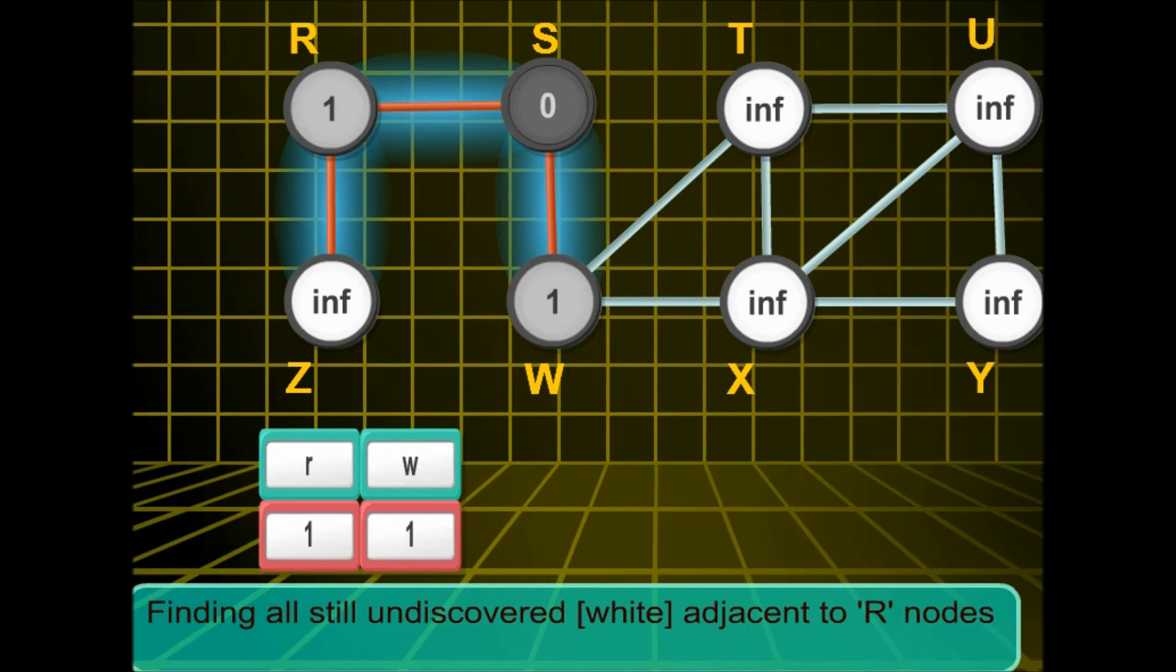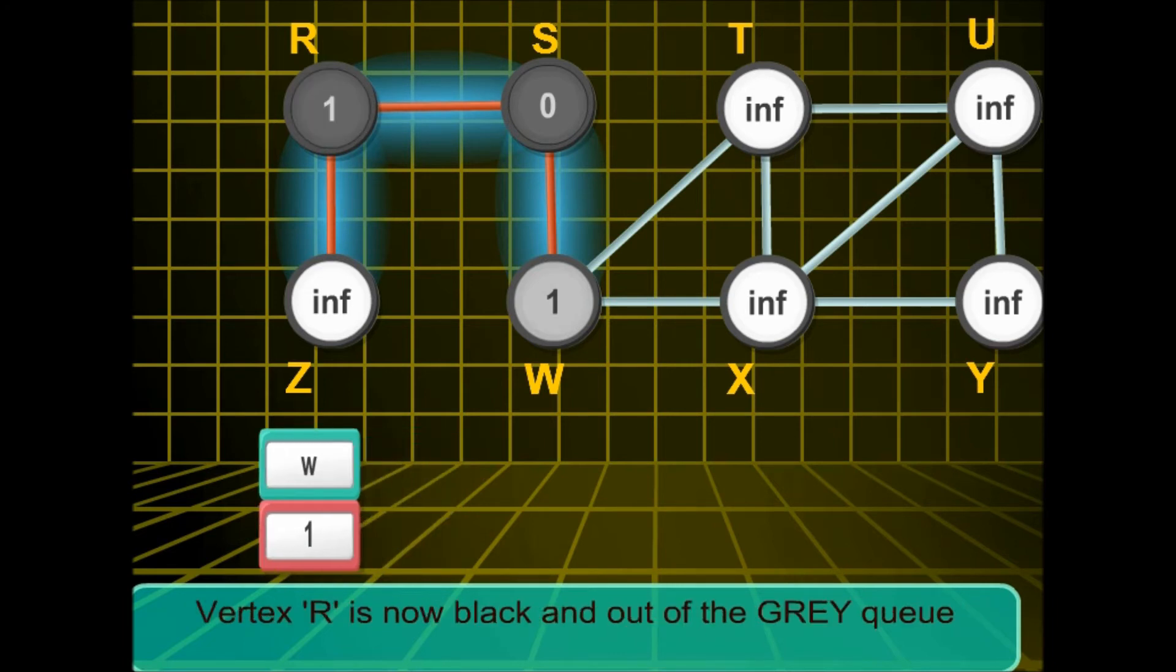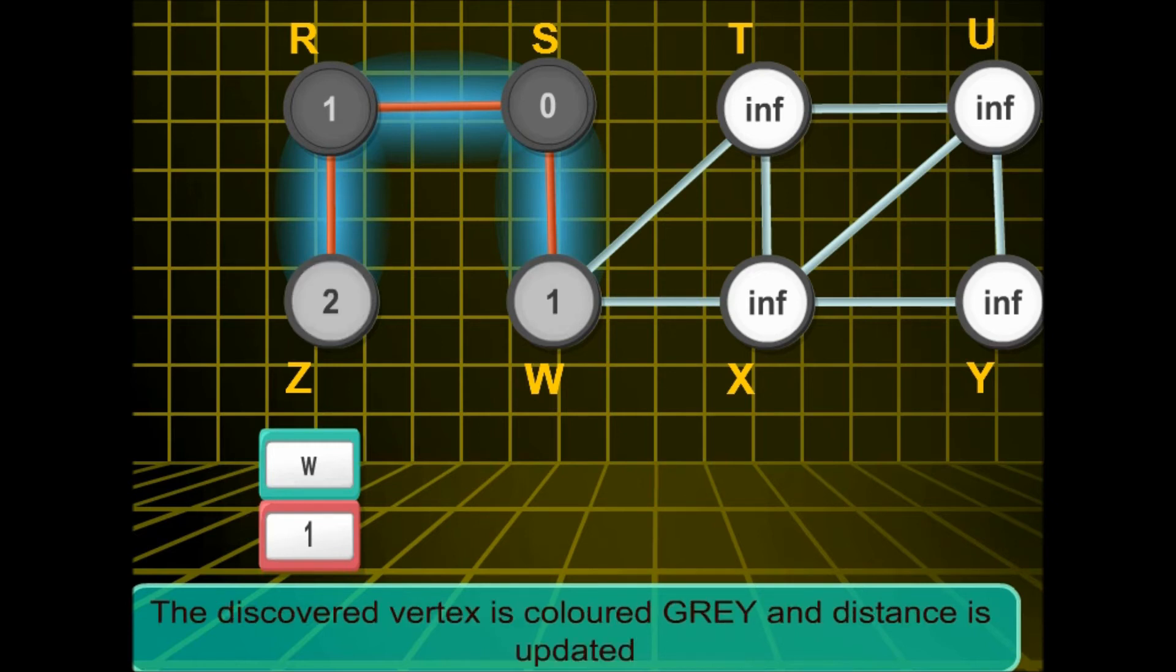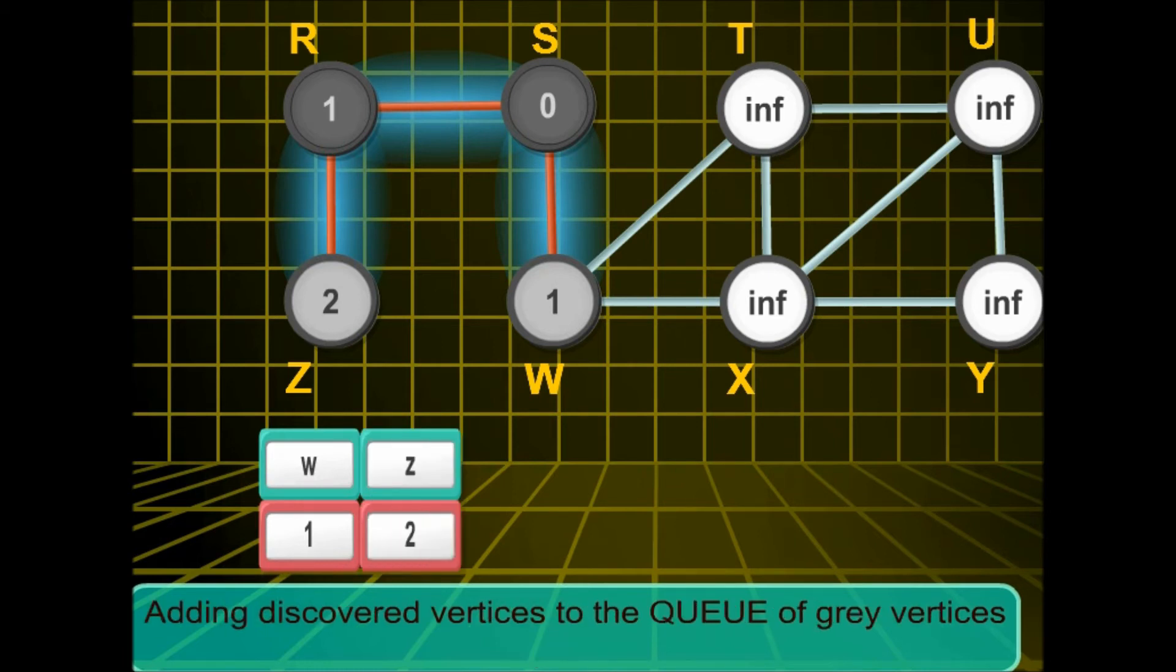Now in the next step we'll be finding the neighbour of r. So as we found z to be the neighbour of r, we dequeue r and mark it black. Then the distance of z is updated. Remember this distance is from the root from where we started. Notice z has been enqueued now.